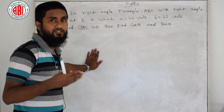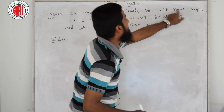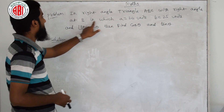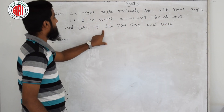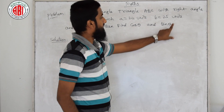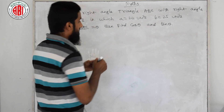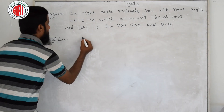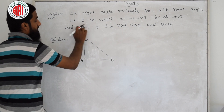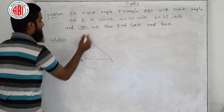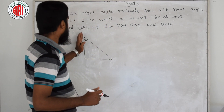Now exercise 11.1, problem number 3. You can see the question on the board. In right angle triangle ABC with right angle at B, AB equals 24 units, AC equals 25 units, and angle BAC equals theta. Find cos theta and tan theta. Let me draw the triangle — right angle triangle ABC with the right angle at B.